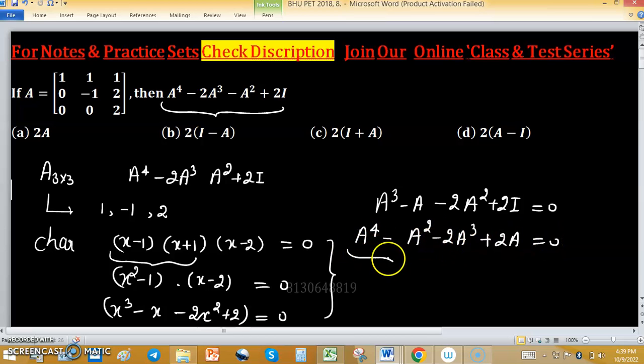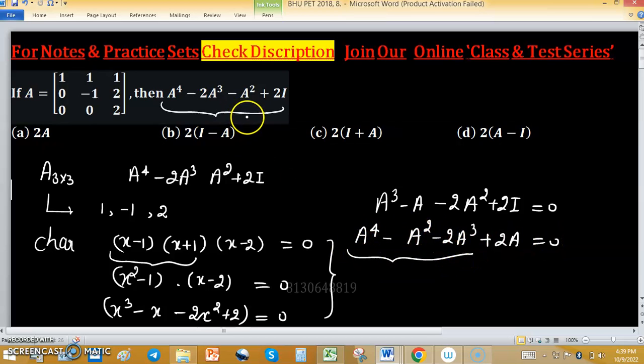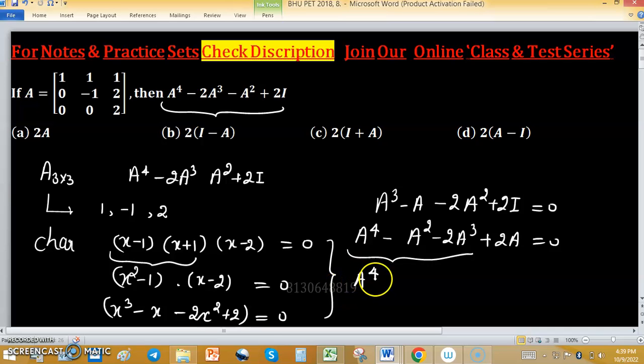Now, arrange the terms as we need. So, A raised to the power 4 minus 2A cube minus A square plus 2 times identity, it is added both sides.